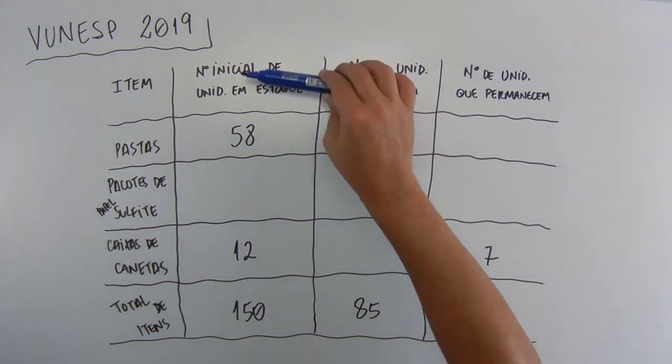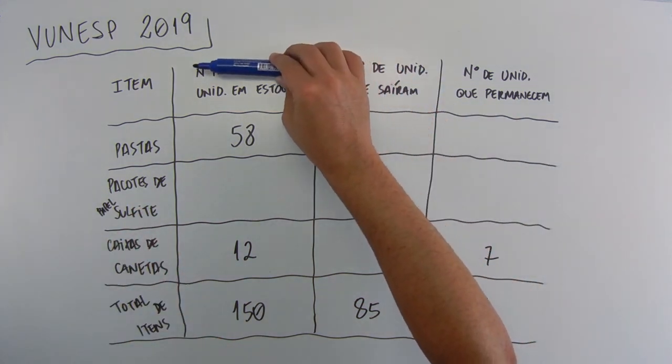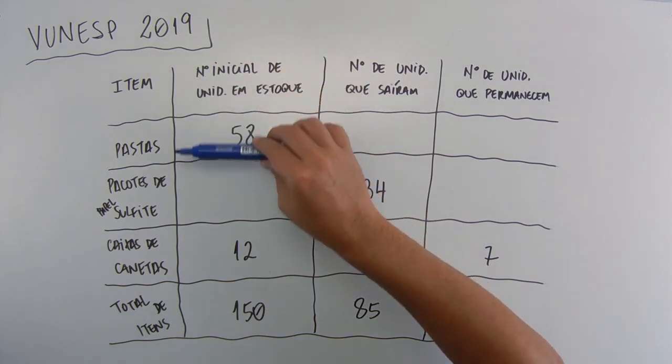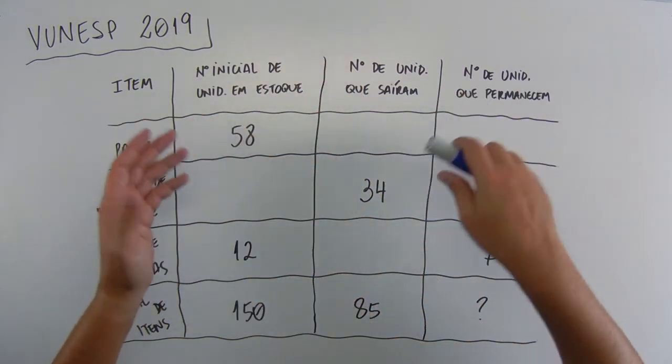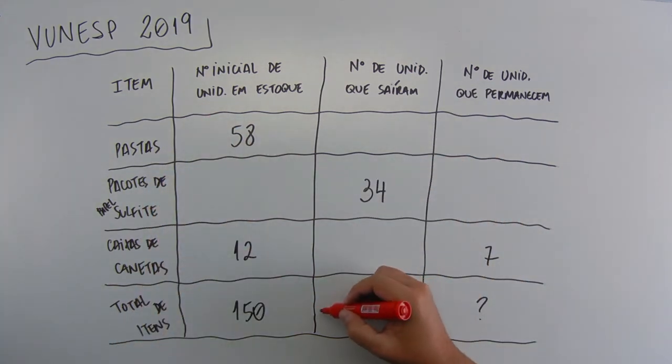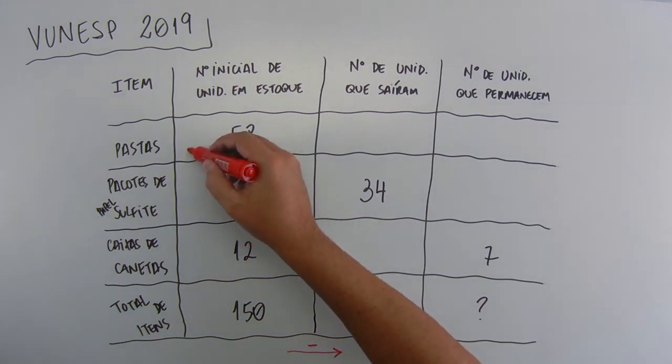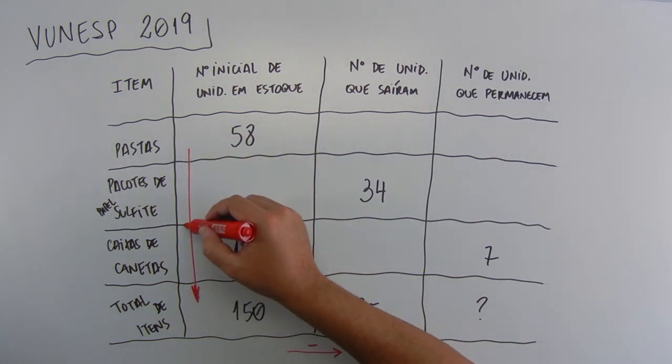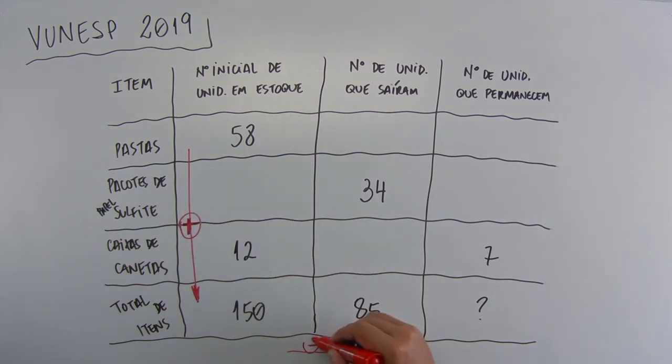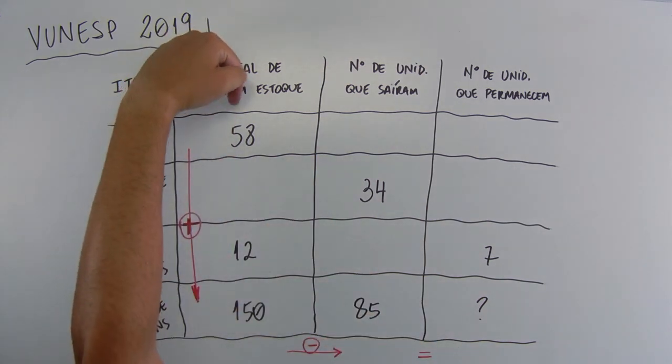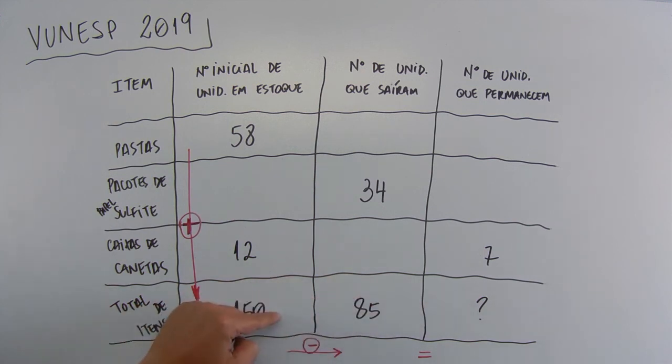Another thing also, here, initial stock, we have this number, plus this, plus this, has to give this. The key to this exercise is understanding that here we're going to do a subtraction, from here to here is minus, and here is equal, and from here to here is plus, and here is minus. So, if you come in this direction, you're going to add. If you come in this direction, you're going to subtract this minus this, which has to give this. Done, now let's read the statement.